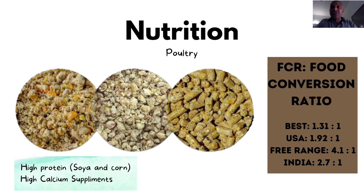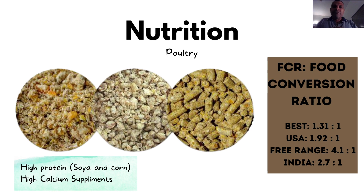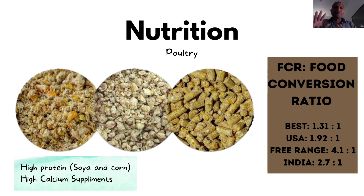This leads us to what is called the food conversion ratio, or FCR. The food conversion ratio is the ratio of food we feed to the chicken to the amount of chicken it produces. The best FCR is 1.31 to 1, meaning it takes 1.31 kilograms of feed to produce 1 kilogram of chicken - this is extremely uncommon. The USA has an FCR of close to 2, meaning it takes 2 kilograms of feed to produce 1 kilogram of chicken.